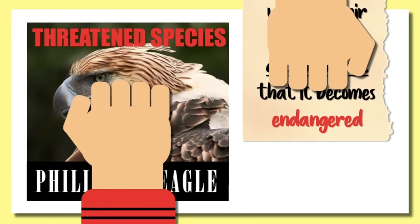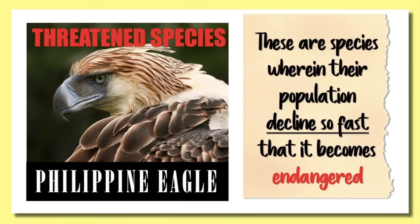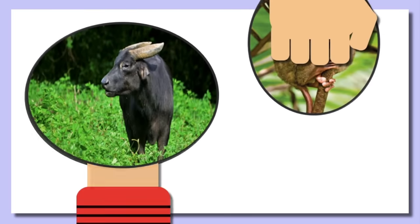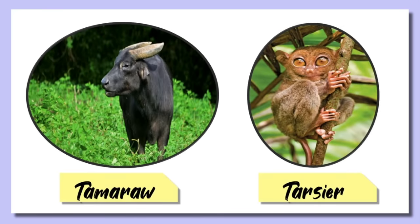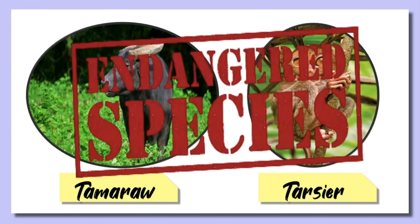Next, let us discuss threatened species. These are species whose population declines so fast that they become endangered. One example is our Philippine eagle, or the monkey-eating eagle. Take a look at these pictures. The first picture is the Tamaraw from Mindoro, and Tarsiers that are usually seen in Bohol, Philippines. When a species population becomes so low that only a few remain, the species is considered endangered — just like the Tamaraw and Tarsier in the Philippines.